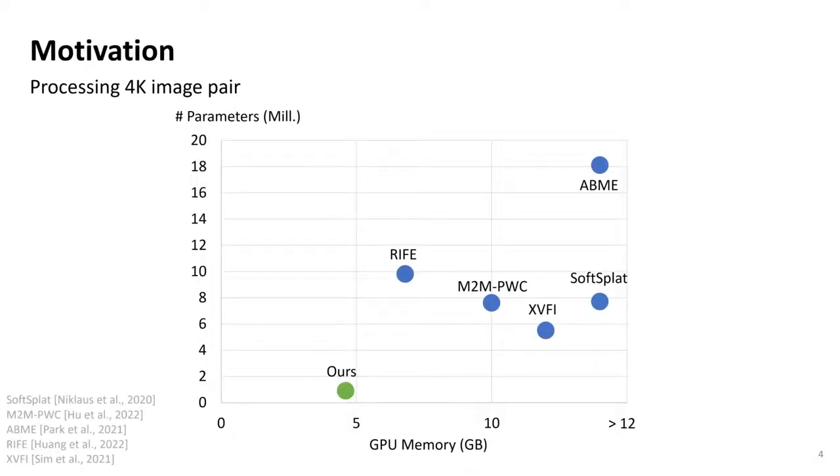This becomes especially obvious when we visualize the required computational resources of existing methods for processing high-resolution 4K videos. We plot here the required GPU memory versus the number of trainable parameters of some recent methods. The lower and the more to the left, the more efficient a method is in terms of computational resources. We can see how with our proposed method we can lower these requirements significantly. In this presentation, we will describe our main design choices as well as show that the perceptual quality has not been sacrificed.